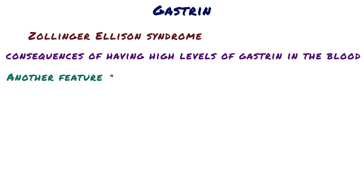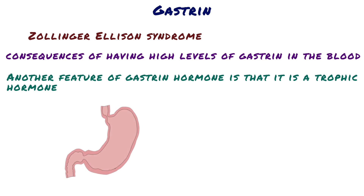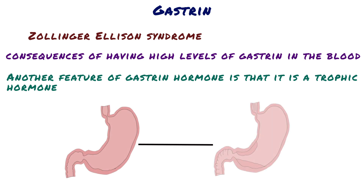Another feature of gastrin is that it is a trophic hormone. A trophic hormone is a hormone that has a growth effect — hyperplasia or hypertrophy — on the tissue it is stimulating. Therefore, another effect of Zollinger-Ellison syndrome is hypertrophy of the gastric mucosa.